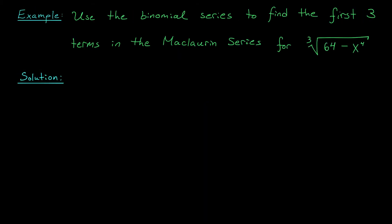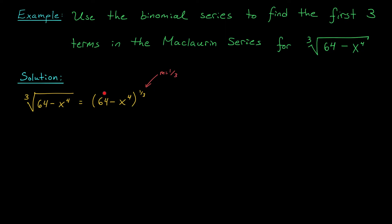In this example, I'd like to use the binomial series to find the first three terms in the Maclaurin series for the cube root of 64 minus x to the 4. If we're going to use the binomial series, we should start by rewriting this expression to look more like 1 plus x to the m. The cube root of 64 minus x to the 4 equals 64 minus x to the 4, all to the 1 third. So m equals 1 third, but I want the inside to look like 1 plus something. Here I don't have 1, I have 64, so I'm going to factor that out.